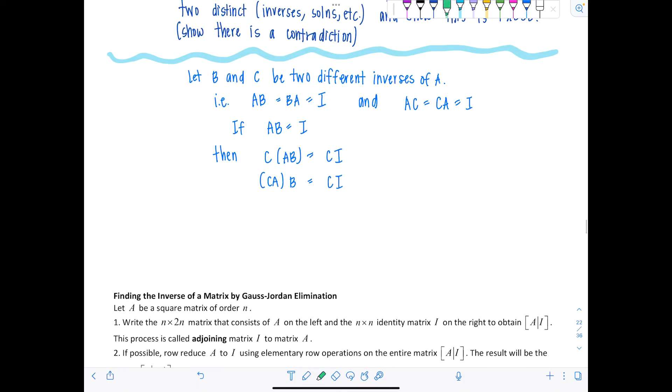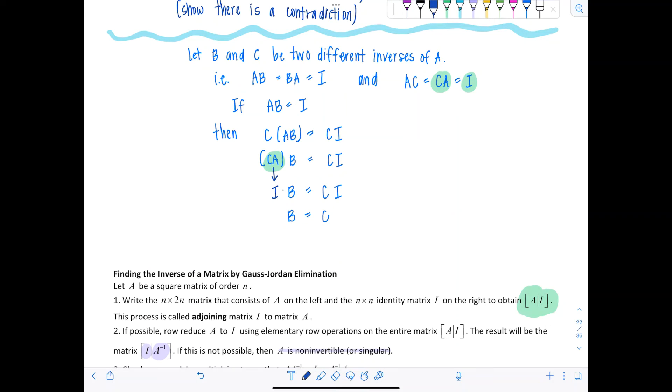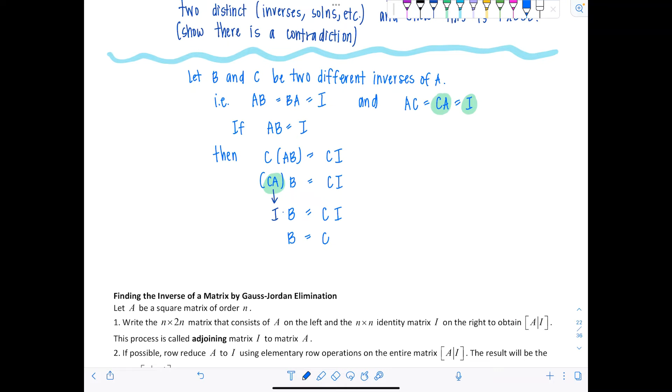Remember we have an associative property. So I could write this as CA times matrix B is equal to C times I. C times A, since C is an inverse of A is equal to I. So I'm going to replace this product C times A with I. So I have I times B on the left is equal to C times I. Since I is the identity matrix, I times B is matrix B. C times I is also matrix C. So what did we just show? That matrix B is equal to matrix C.